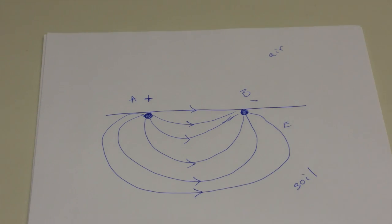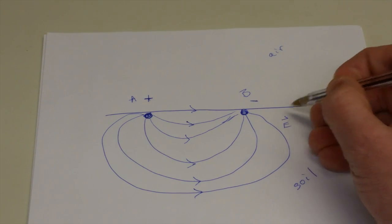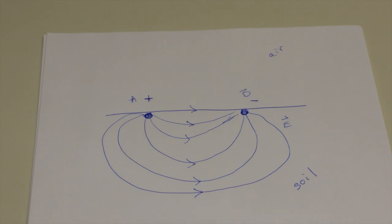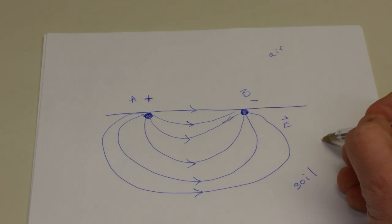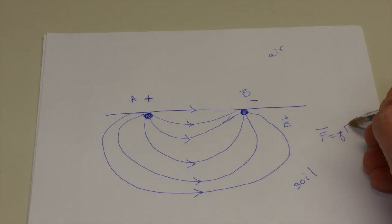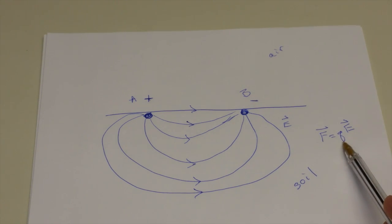So these are the electric field lines E surrounding these two electrodes. Now one of the things that we know is that the force on a charge Q is equal to that charge times the field. And so what this means is that any charge flowing in here will flow along the field lines. This essentially gives us then a current map between electrodes A and B.